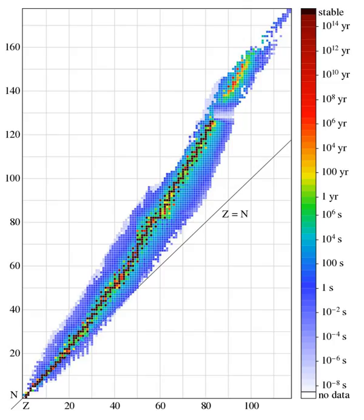For example, actinides with odd neutron number are usually fissile, while actinides with even neutron number are usually not fissile but are fissionable with fast neutrons.